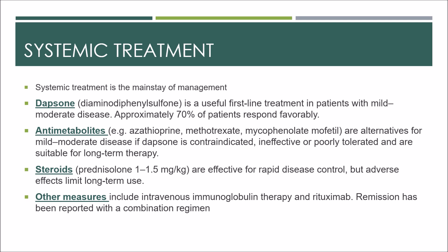Systemic treatment is the mainstay of management and any detectable inflammatory activity should be suppressed. Dapsone is a useful first-line treatment in patients with mild to moderate disease — approximately 70% of patients respond favorably. It is contraindicated in G6PD deficiency. Sulfasalazine is sometimes better tolerated. Anti-metabolites such as azathioprine, methotrexate, and mycophenolate mofetil are alternatives for mild to moderate disease if dapsone is contraindicated, ineffective, or poorly tolerated, and are suitable for long-term therapy. Cyclophosphamide may be reserved for severe or refractory disease.